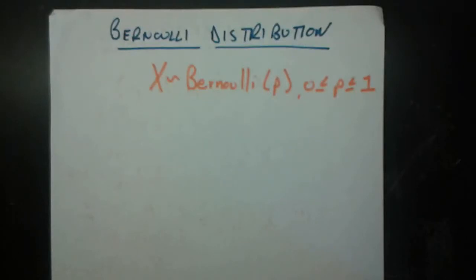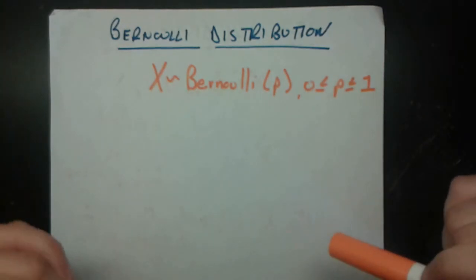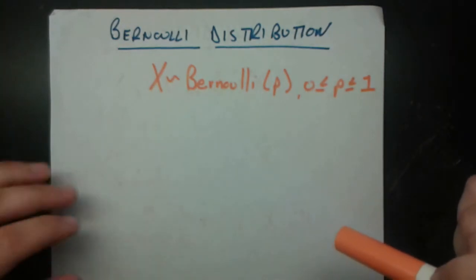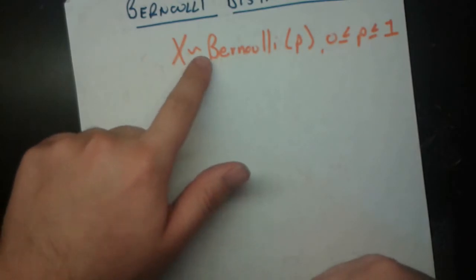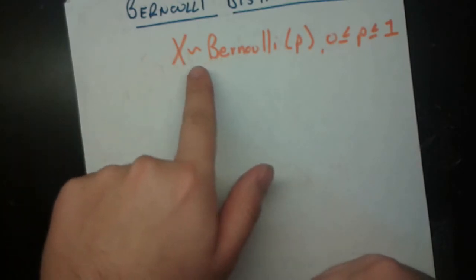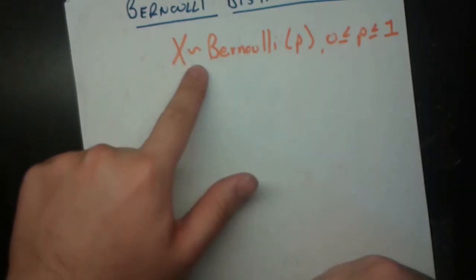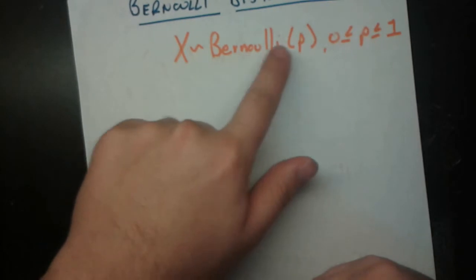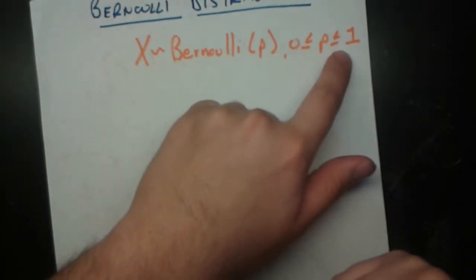Let's start things off by talking about the most basic type of random variable, but also one that's very important, as we'll see in later videos. This is called the Bernoulli distribution. We say that a random variable x is distributed — we write a little tilde — x is distributed as Bernoulli p, where p is something between 0 and 1 inclusive.